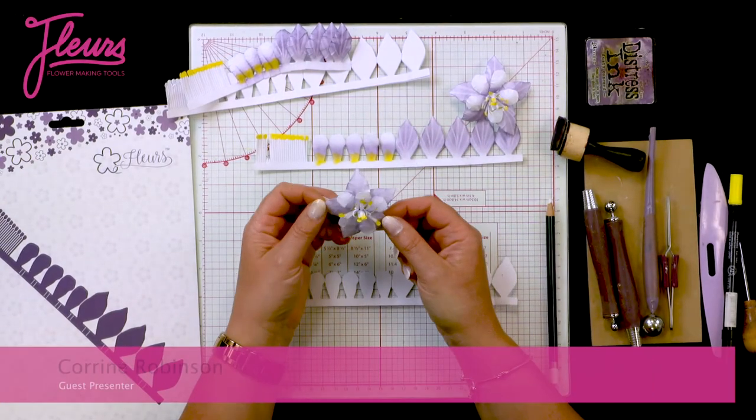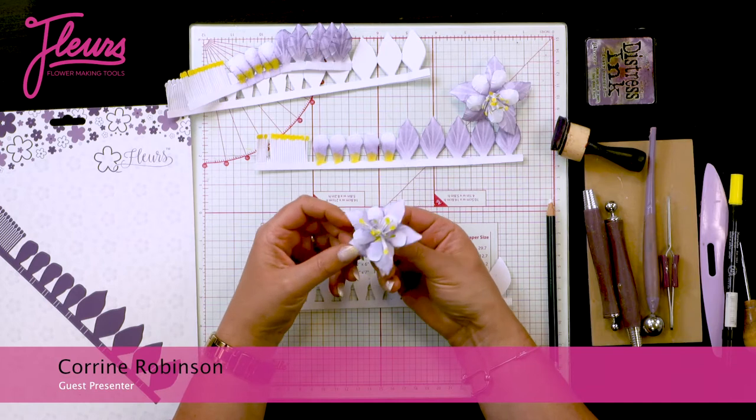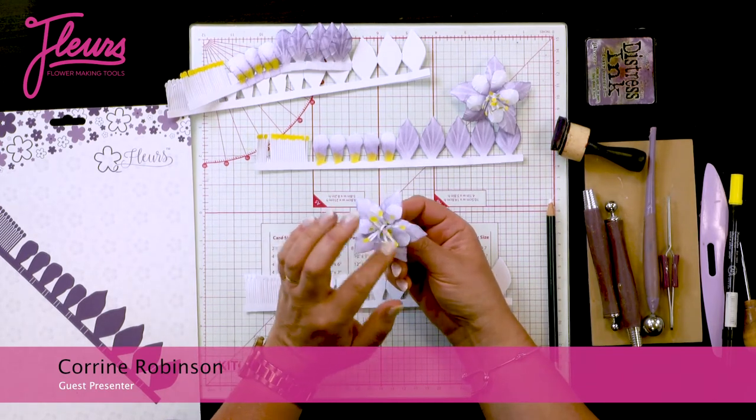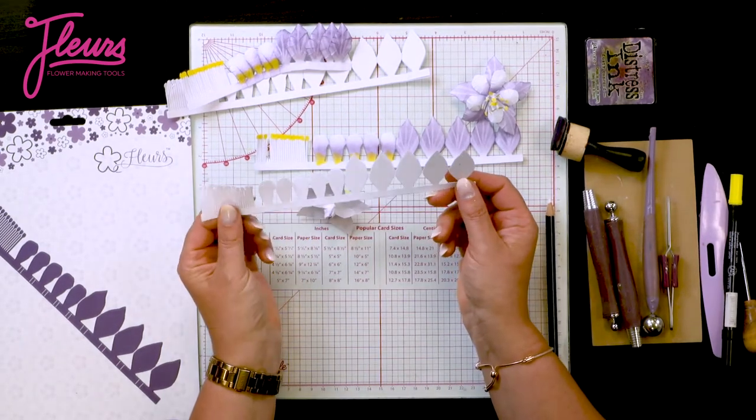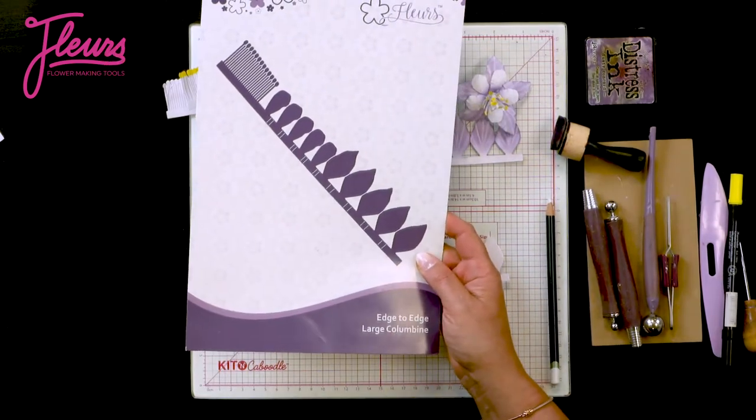I'm now going to show you how you can make rolled floral embellishments for your project. This one is columbine, or aquilegia, and it was made from a long strip of paper that I have cut using one of my edge-to-edge flower dies.